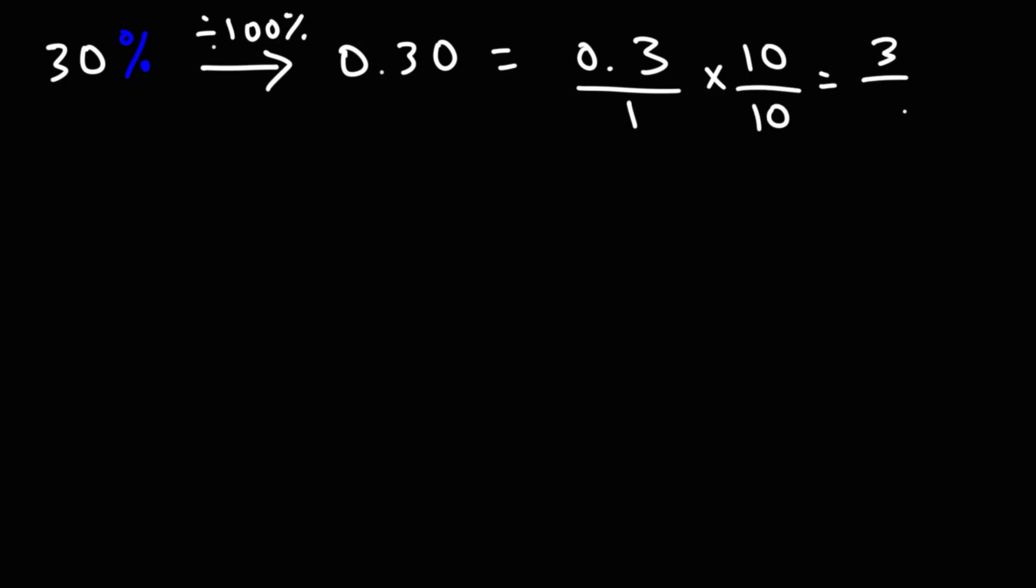0.3 times 10 is 3. 10 times 1 is 10. Of course, we're multiplying across. So the answer for this example is 3 over 10.